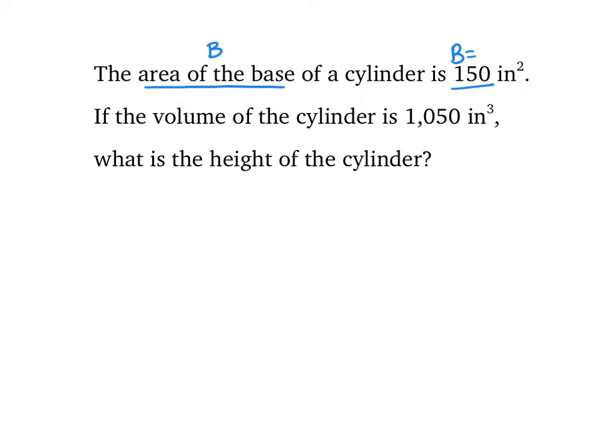The next line says if the volume is 1,050, so that tells me V is 1,050. What is the height of the cylinder? So in this question, I'm looking for h. Next, I want to start with the formula, and the formula for a cylinder is the area of the base times the height.